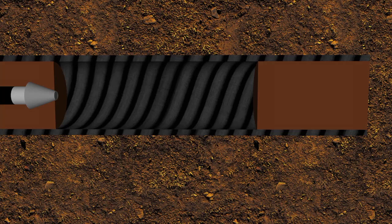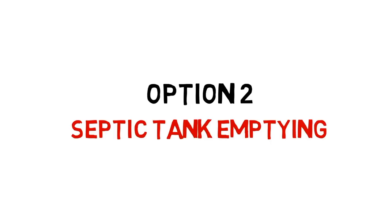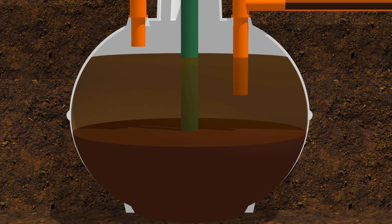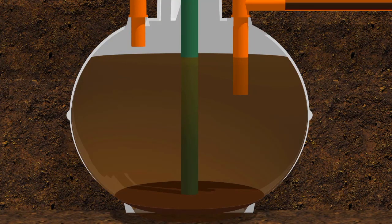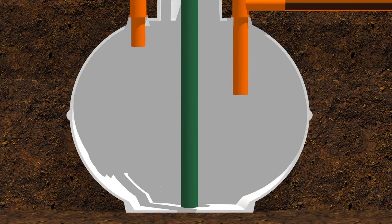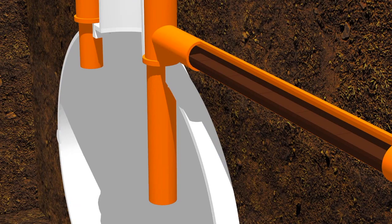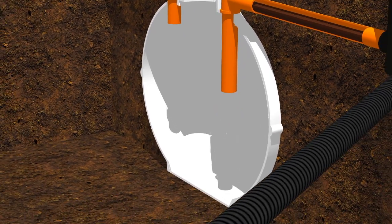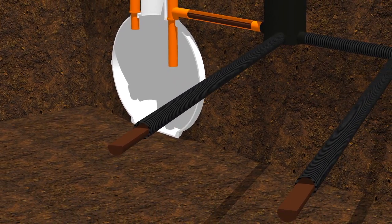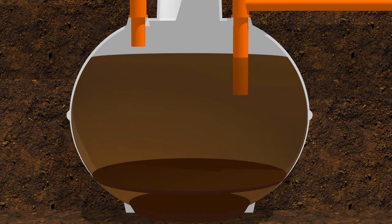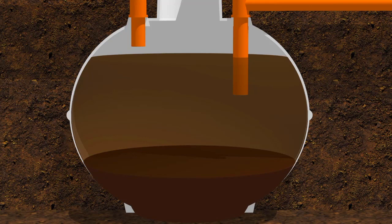Option two: septic tank emptying. Many people get their septic tanks sucked out, but whilst this sounds like a good idea, it doesn't really fix the problem. Although the wastewater inside the tank is sucked out, the fat, grease, and sludge causing all the blockages is still stuck in all the pipes leading to and from the soakaway. This sludge will continue to clog the system, and the whole process starts all over again within a few days. At £200 each time, this method can soon become a very expensive option.